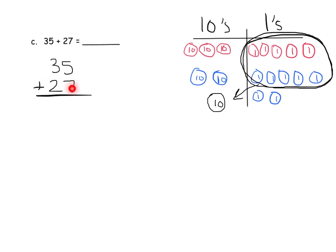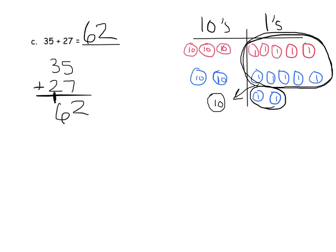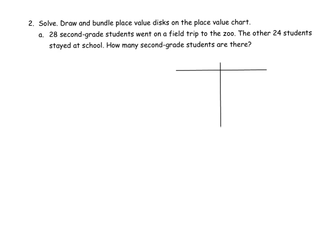Five plus seven is twelve. We take the two leftover ones and write them in the ones column. The ten that was bundled goes to the tens column, recorded as a little carried 1. Now we have three tens plus two tens plus one new ten: three plus two plus one equals six, so the answer is sixty-two.